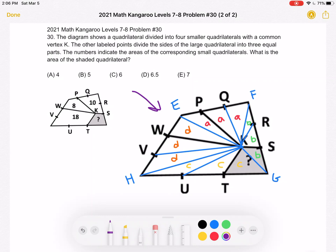For example, if we look at triangle EKF. And again, the problem tells us that the labeled points divide the sides of the large quadrilateral into three equal parts. So that means that this side length EP, side length PQ, side length QF are all equal. And these individual three little triangles have the same height and they must all have the same area.